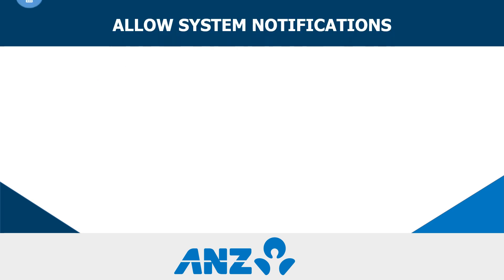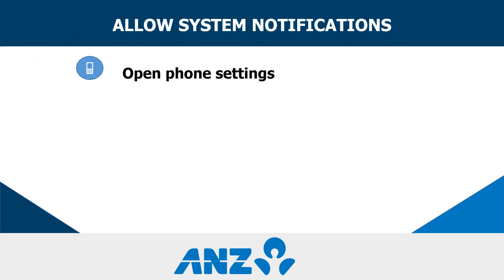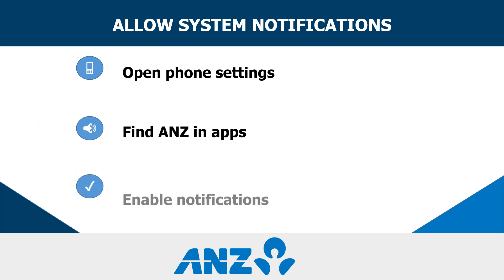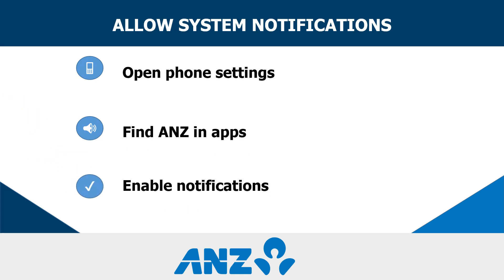Go to your phone's main settings, locate the ANZ app in the list, and make sure notifications are allowed for the app at the system level.